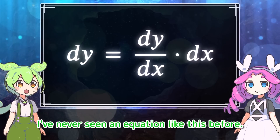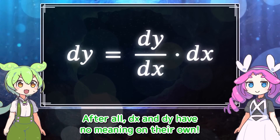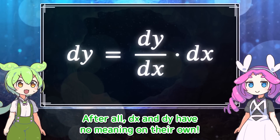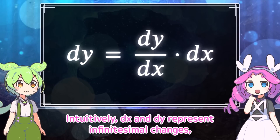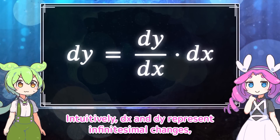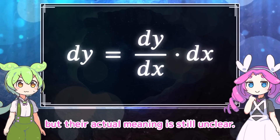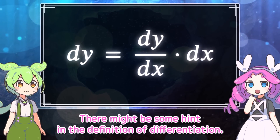I've never seen an equation like this before. After all, dx and dy have no meaning on their own. Intuitively, dx and dy represent infinitesimal changes, but their actual meaning is still unclear. There might be some hint in the definition of differentiation.